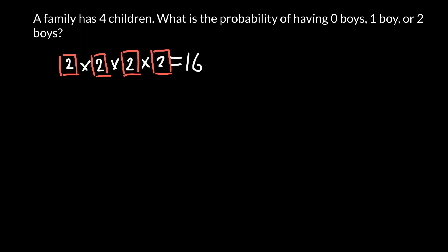The first question: what is the probability that we would have zero boys? The only variant when we would have zero boys would be when the first child is a girl, the second child is a girl, the third child is a girl, and the fourth child is a girl. There is only one such variant out of 16.